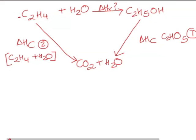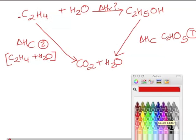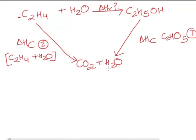So let me change the color of the pen and show this to you in a green color. So route 1 is going from ethene and water to CO2 and water. So that is route 1.